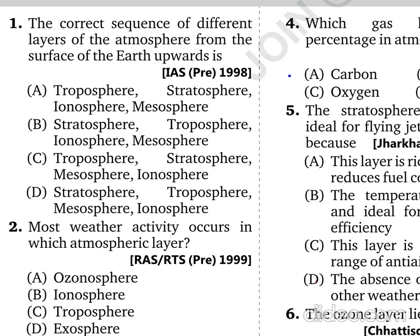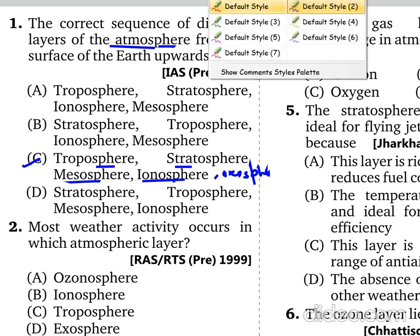The atmosphere is an envelope of air above the Earth's surface with a height of around 1000 km. It is divided into different layers. The first layer is the Troposphere, followed by the Stratosphere, then Mesosphere, Thermosphere (also called Ionosphere), and finally the Exosphere. This is the correct sequence.